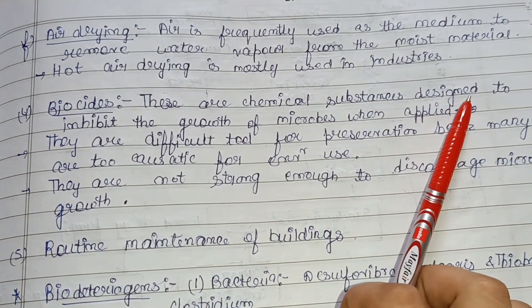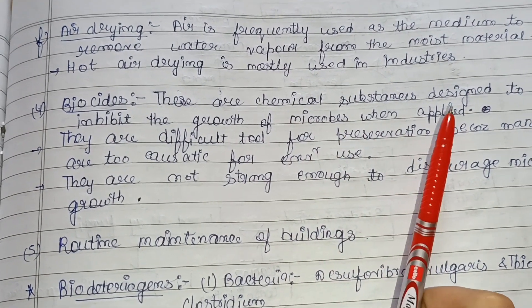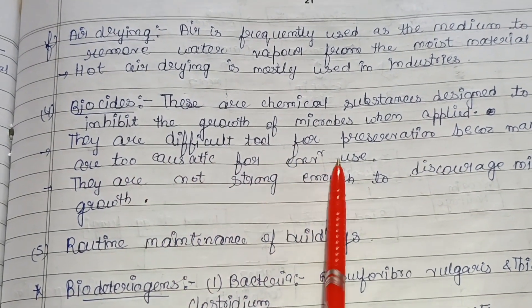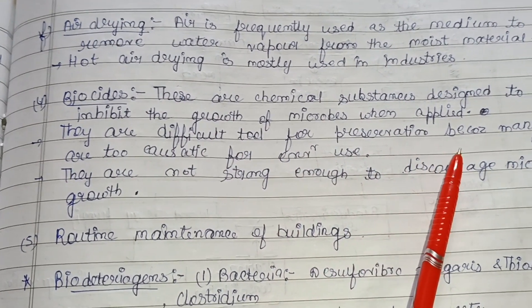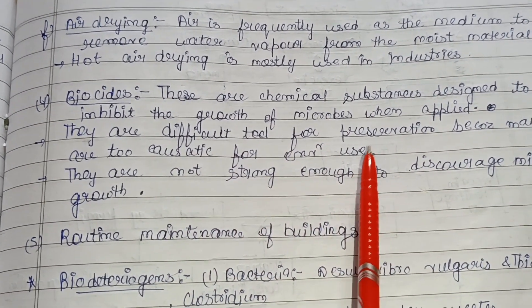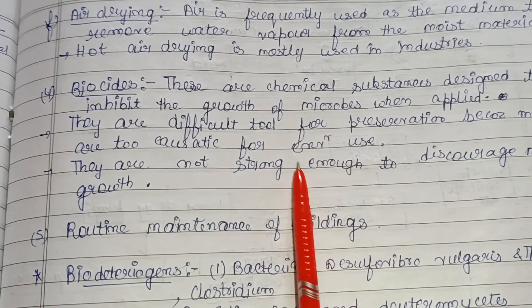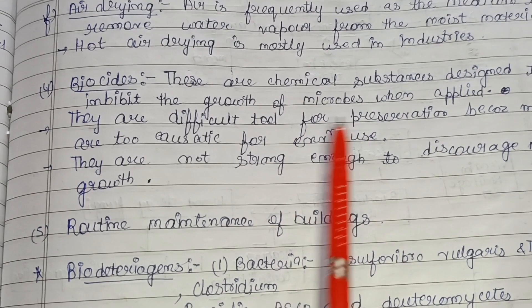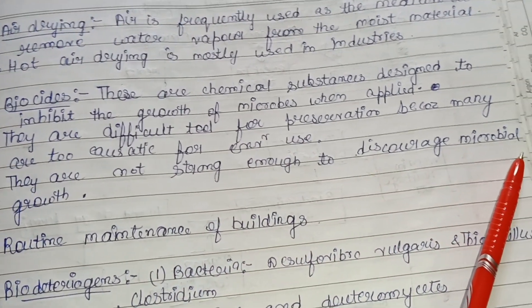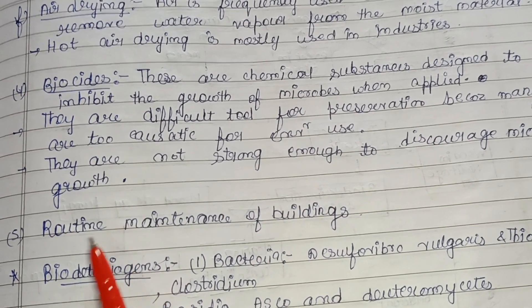Biocides are chemical substances designed to inhibit the growth of microbes when applied — they are able to stop microbial growth. However, they are a difficult tool for preservation because many are too caustic for the environment, causing pollution or harm. There is also a risk that they are not strong enough to discourage microbial growth.